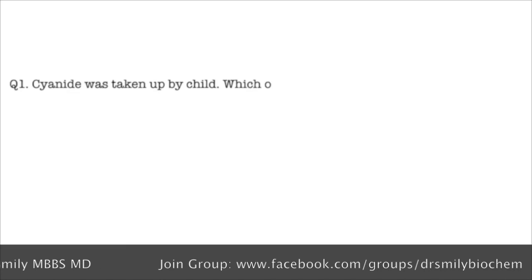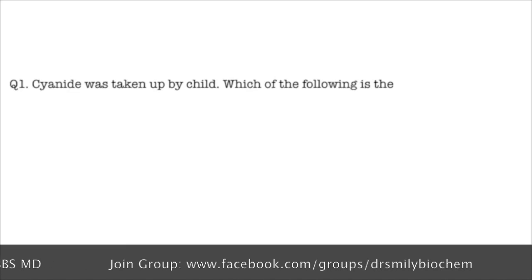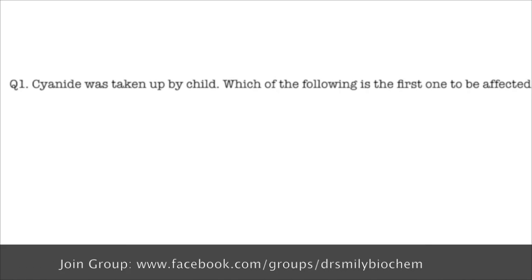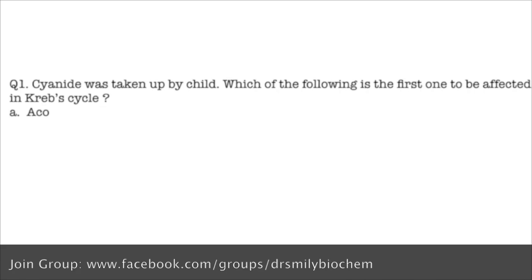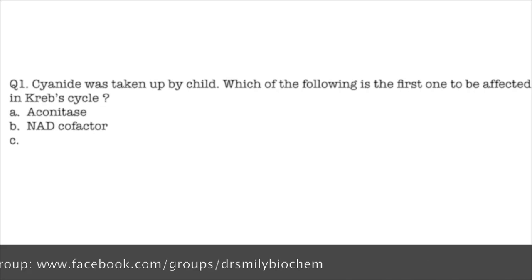Question number 1: Cyanide was taken up by the child. Which of the following is the first one to be affected in Krebs cycle? Options are aconitase, NAD cofactor, citrate, and acetyl CoA.